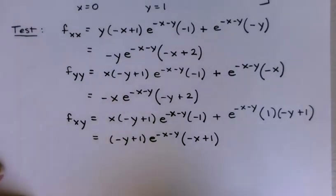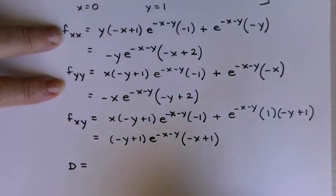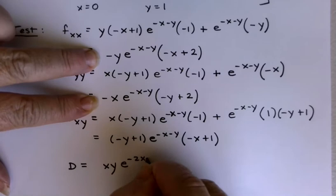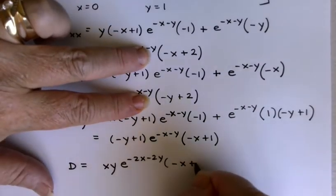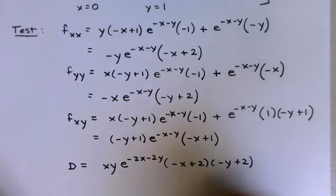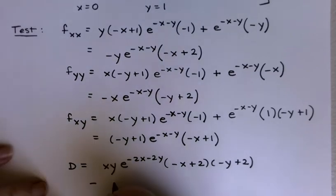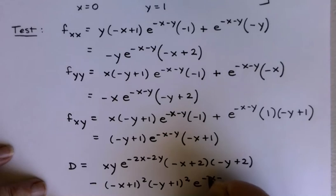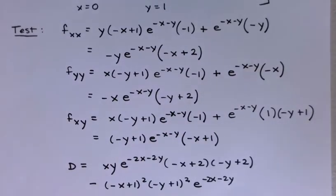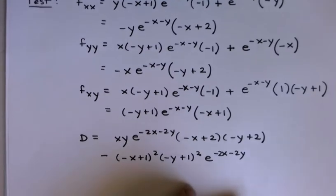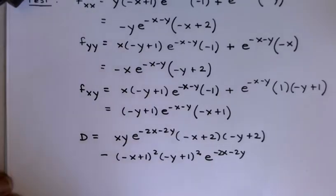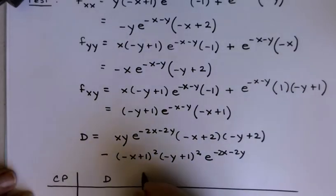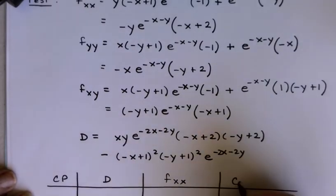So what's D? It's the product of f_xx and f_yy, giving positive xy·e^(-2x-2y) times (-x+2)(-y+2), minus the square of f_xy, which is (-x+1)²(-y+1)²·e^(-2x-2y). That's kind of an ugly D, but fortunately we have nice points to plug in: (0,0) and (1,1). For each critical point I need to evaluate the sign of D and the sign of f_xx, then draw a conclusion.